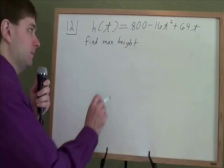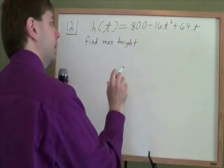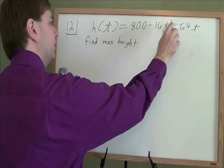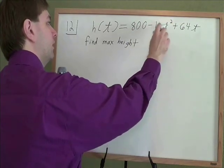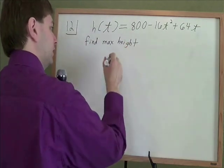This problem wants us to find the maximum height of a projectile with this height function here. And the big trick on this one is you need to recognize that this is a quadratic formula here. You've got a t squared, a regular t, and then a constant. And that is just a quadratic.